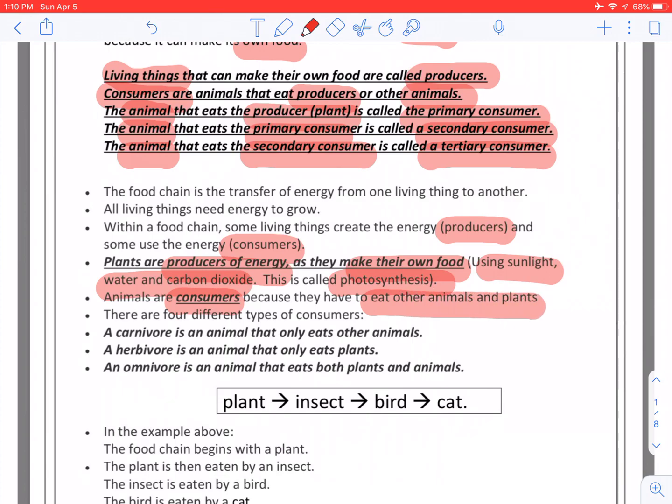There are four different types of consumers, but the three that we learn about are: a carnivore, which is an animal that only eats other animals; a herbivore, that is an animal that only eats plants; and an omnivore is an animal that eats both plants and animals.